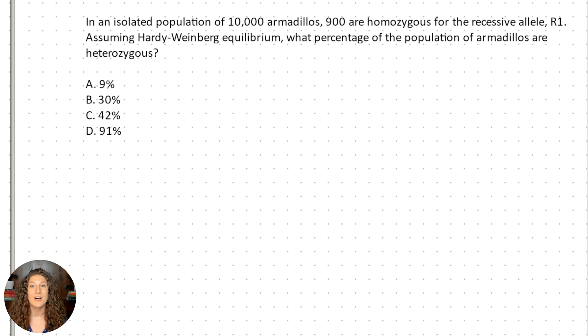Okay, the question goes: in an isolated population of 10,000 armadillos, 900 are homozygous for the recessive allele R1. Assuming Hardy-Weinberg equilibrium, what percentage of the population of armadillos is heterozygous? The actual population of animals is arbitrary. I just chose armadillos because my husband's favorite animal is armadillos. On the MCAT it will probably be any population of animals or insects, but it's probably not going to be humans.